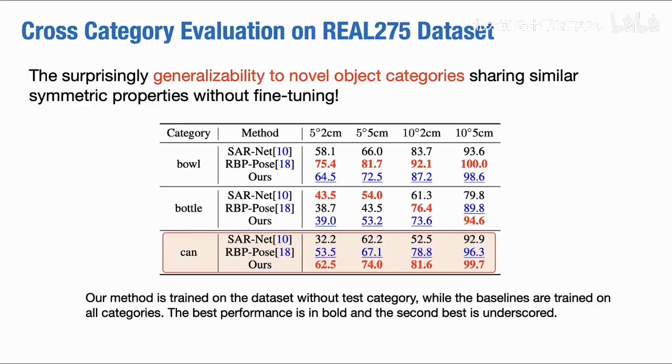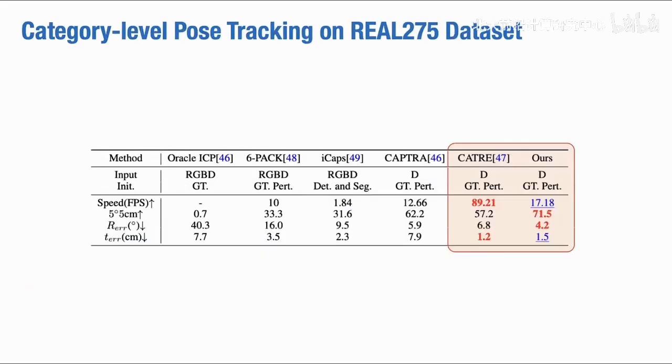Without any fine-tuning, our method could generalize to novel object categories sharing similar symmetric properties. Take the can as an example. Our method even surpasses all the baselines directly trained on can category greatly.